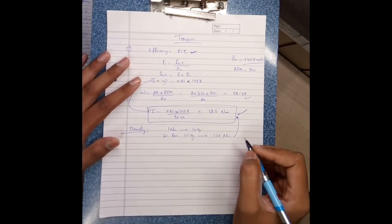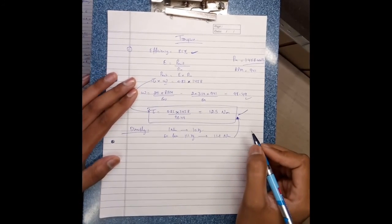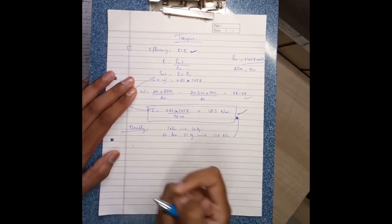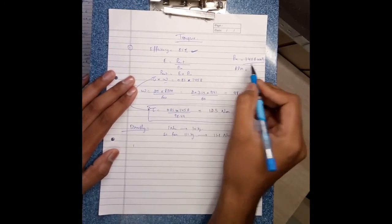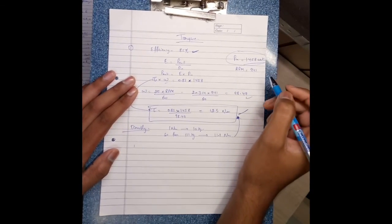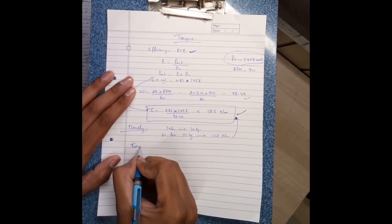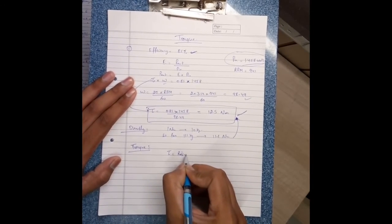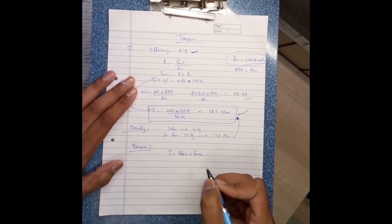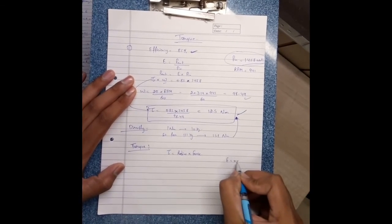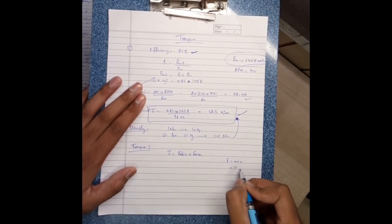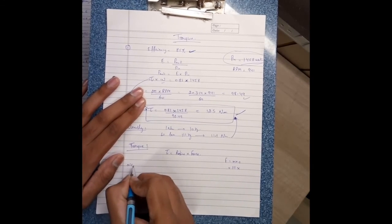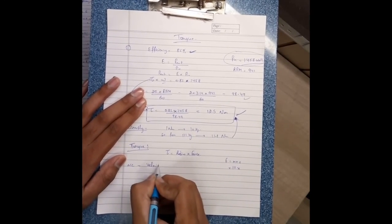Now if you don't know the power, then torque can be calculated as torque equals radius times force. Force equals mass times acceleration. Mass is 111 kg. How to find acceleration? Acceleration equals velocity divided by time.